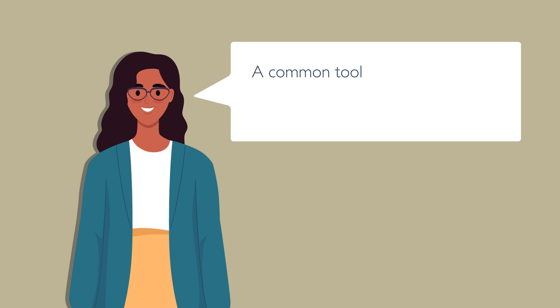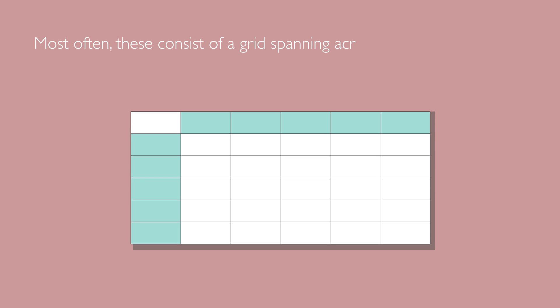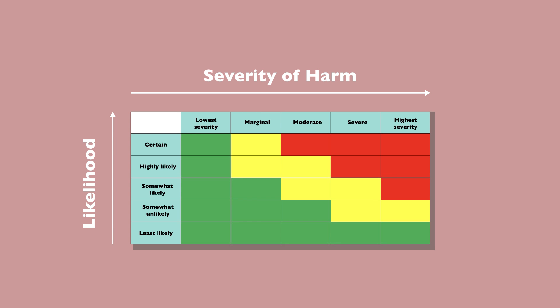A common tool to assess workplace hazards is the so-called risk assessment matrix. Most often, these consist of a grid spanning across two dimensions. One dimension represents the foreseeable harm. The other represents the likelihood of it occurring. Each dimension is presented in ordered categories, and the categories are named to make each one distinct.